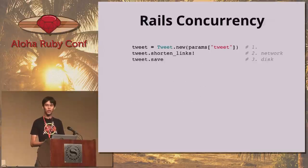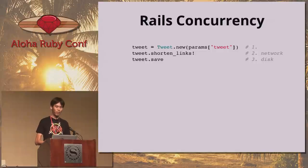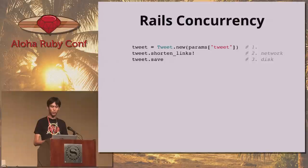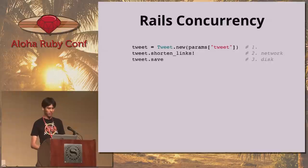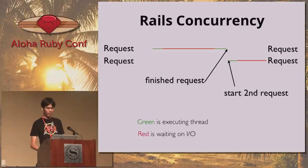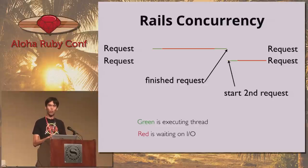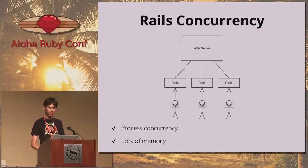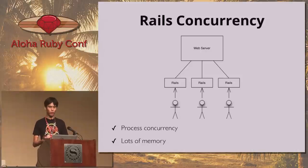If we were writing a controller to save tweets, in the first line we create a new tweet object, then we shorten any links in the text, then save the tweet to a database. Even in just those three lines, we're going out to the network and touching the file system. When we're blocking on I/O, from the CPU's perspective, we can't handle more than one incoming request at a time. The way we get around this today in Rails is we spool up multiple Rails processes, each handling one user at a time. It's simple and it works, but it chews through a lot of memory.